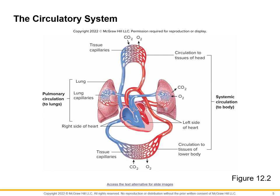Blood from the heart circulates to move where oxygen is taken up and carbon dioxide is released, as we can see in this illustration. From the right side, the blood enters the left lung where oxygen is taken up and carbon dioxide is released to the outside.